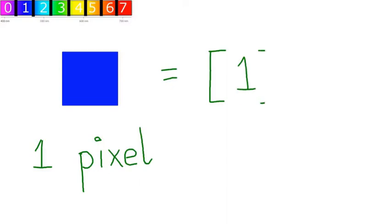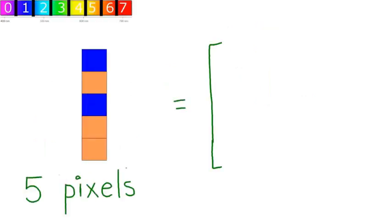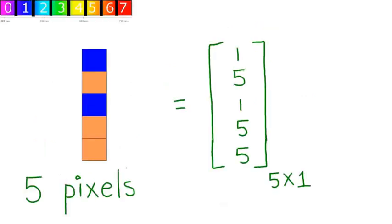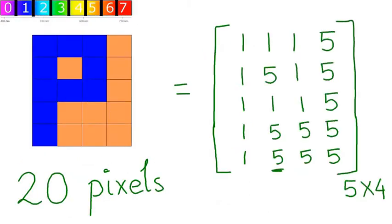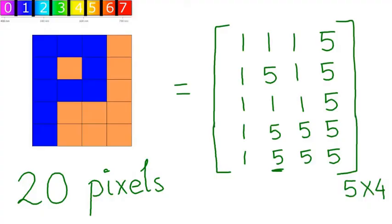If the image is just a single blue dot, then a 1x1 matrix with the value of blue can represent it. If the image is a strip with 5 pixels, then a 5x1 matrix can represent it. And this image can be represented using a 5x4 matrix.